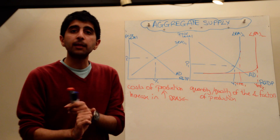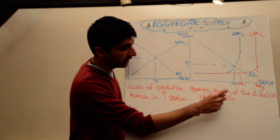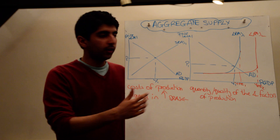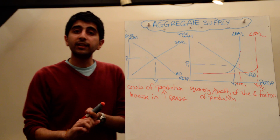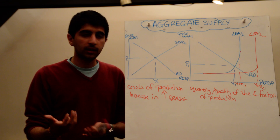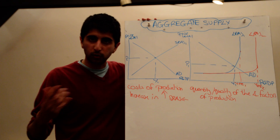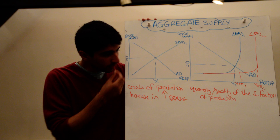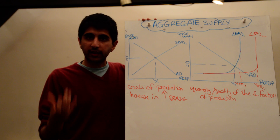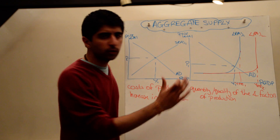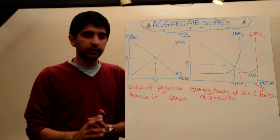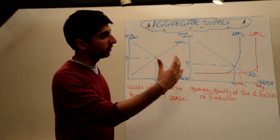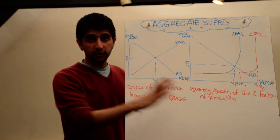The economy can produce more because it has more factors of production. What might cause that? Maybe an improvement in productivity, which increases the quality of labour — labour being one of the four factors: land, labour, capital, enterprise. Maybe an increase in investment, which increases the quantity and quality of capital. Maybe an increase in immigration, which increases the quantity of labour. An improvement in technology increases the quality and quantity of capital. An improvement in infrastructure increases the quantity of capital. Anything that increases the quantity and quality of land, labour, capital, or enterprise will increase LRAS; anything that decreases that will shift LRAS to the left.